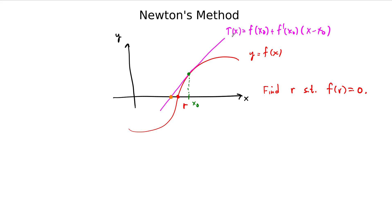The tangent line, in our new context of power series, is the first order Taylor approximation of the function at this point. What we do then is set that equal to zero and find the zero of the tangent function, and then we just repeat this process.